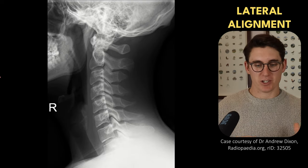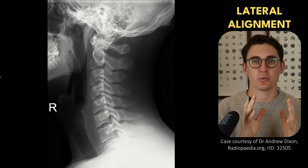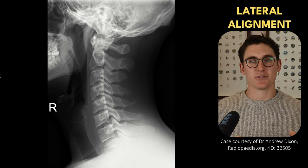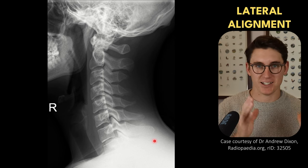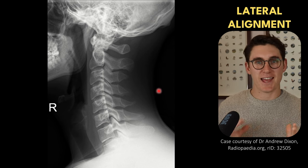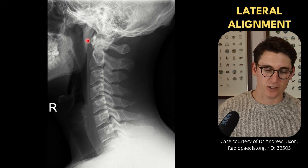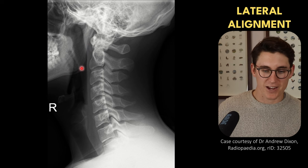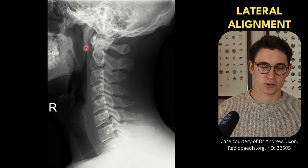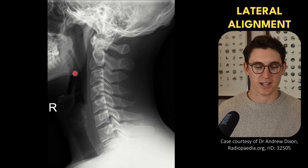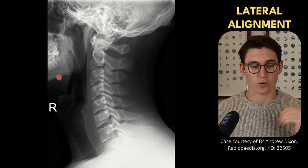Let's start with our lateral x-ray — we can get probably the most information from the lateral, so it's a good place to start. The first thing I like to do is make sure we've got correct alignment, as malalignment of the spine is a great indicator for something being wrong. To check the x-ray itself is not rotated, the best way on a lateral cervical spine is to find the angle of the mandible. On the posterior surface, the left and right mandibles should line up well — any rotation would cause malalignment of those posterior surfaces. We can also check for lateral tilt by looking at the inferior surfaces and seeing they're generally well aligned.